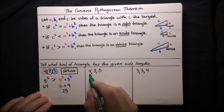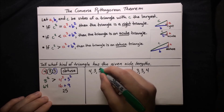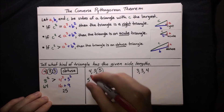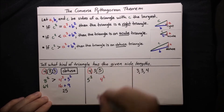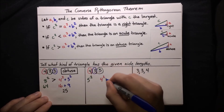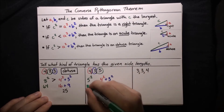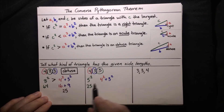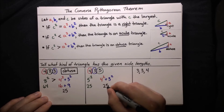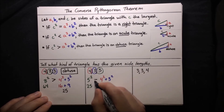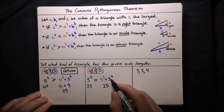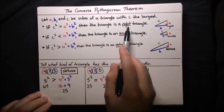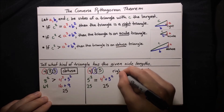Next problem: side lengths 4, 3, and 5. The biggest side is 5, so we compare 5 squared to 4 squared plus 3 squared. Now 5 squared is 25, and we've already done the work to know that 4 squared plus 3 squared is also 25. So 5 squared equals 4 squared plus 3 squared, meaning the longest side is just long enough to be the hypotenuse in a right triangle. So it's a right triangle.